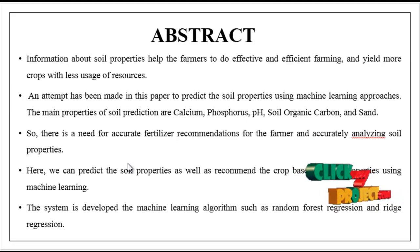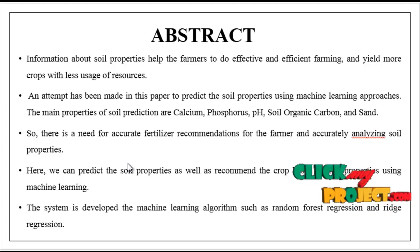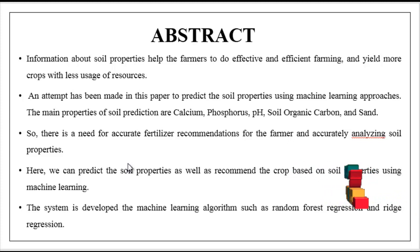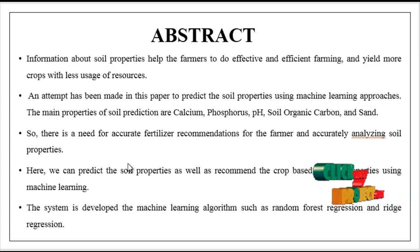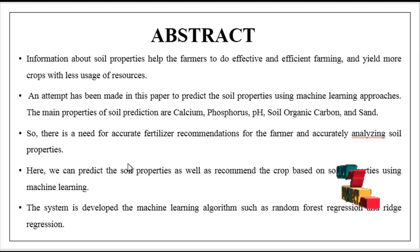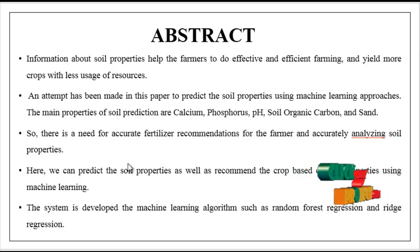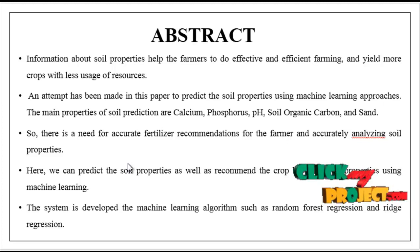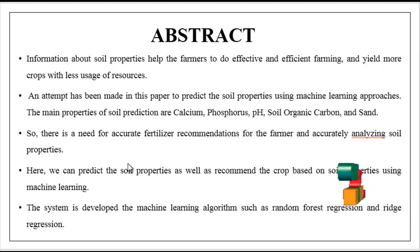We are going to see the overview of our process. The main objective of our project is to predict the soil properties as well as recommend the crop based on predicted soil properties using machine learning algorithms. Information about soil properties helps the farmer to do effective and efficient farming and yield more crops with less usage of resources.